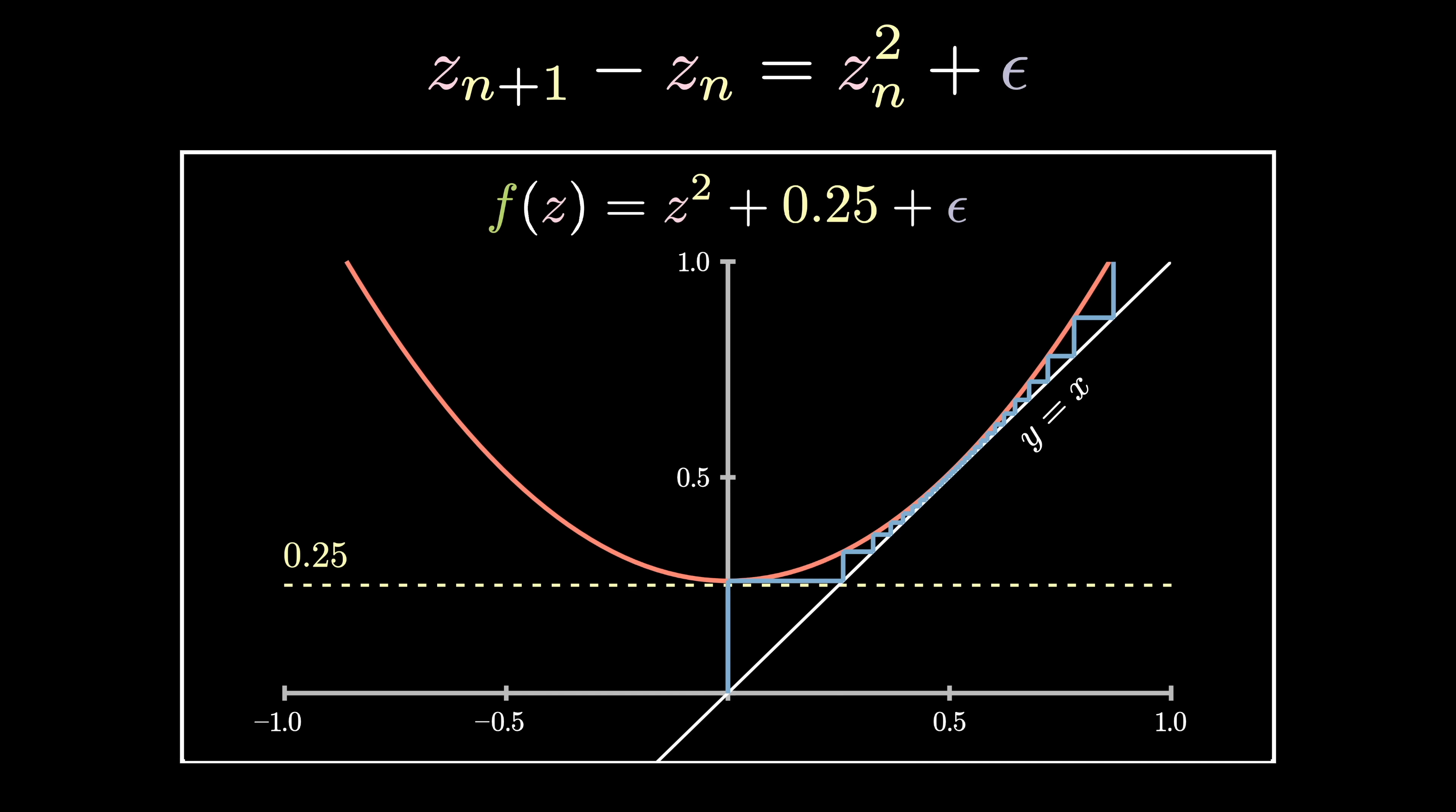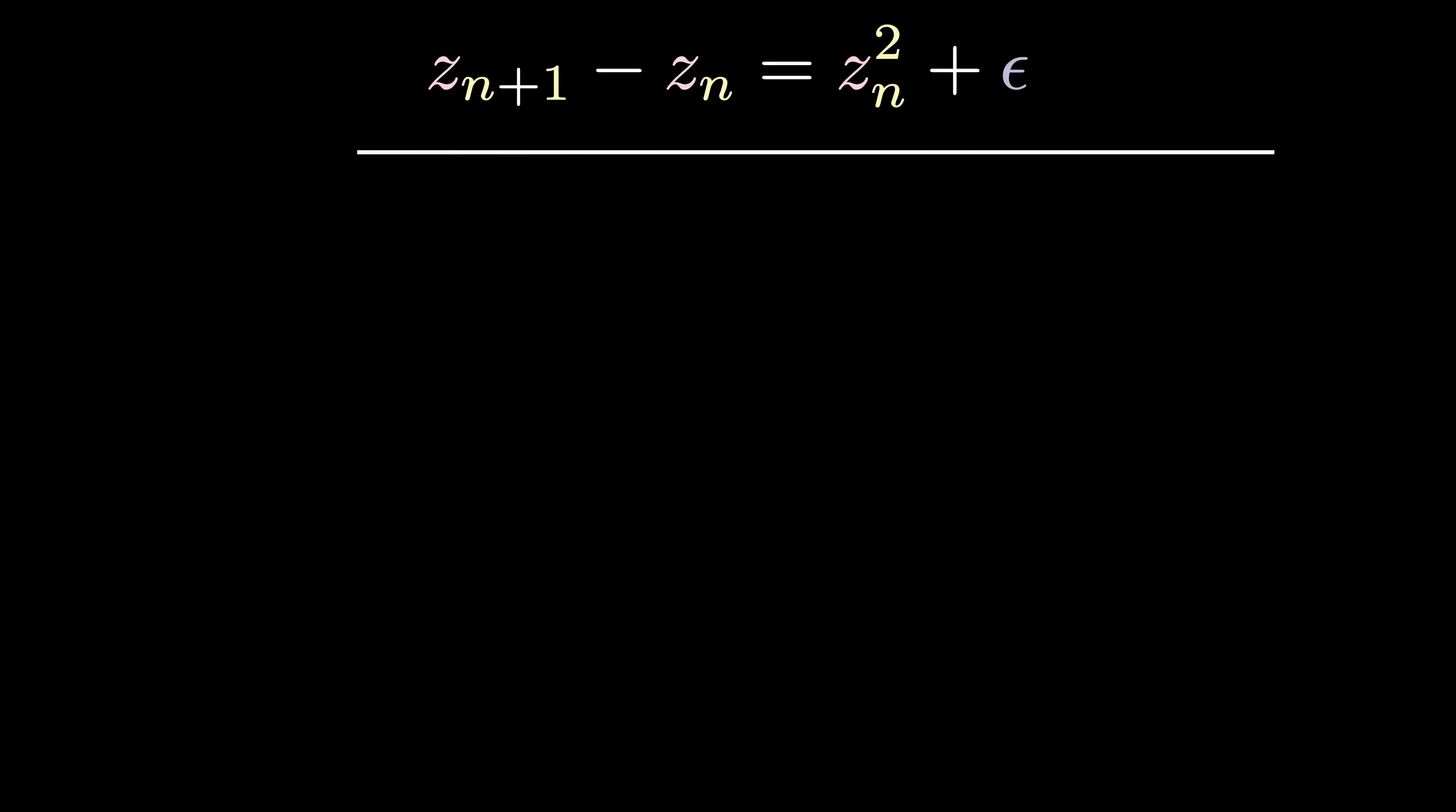Since most of the collisions happen around this point, we can consider all the collisions to happen around this point. And also, about this point, the step size between each collision does tend to 0, so the discrete update tends to a smooth function. And furthermore, z sub n plus 1 minus z sub n corresponds to a tiny change in this function, in other words, the derivative.